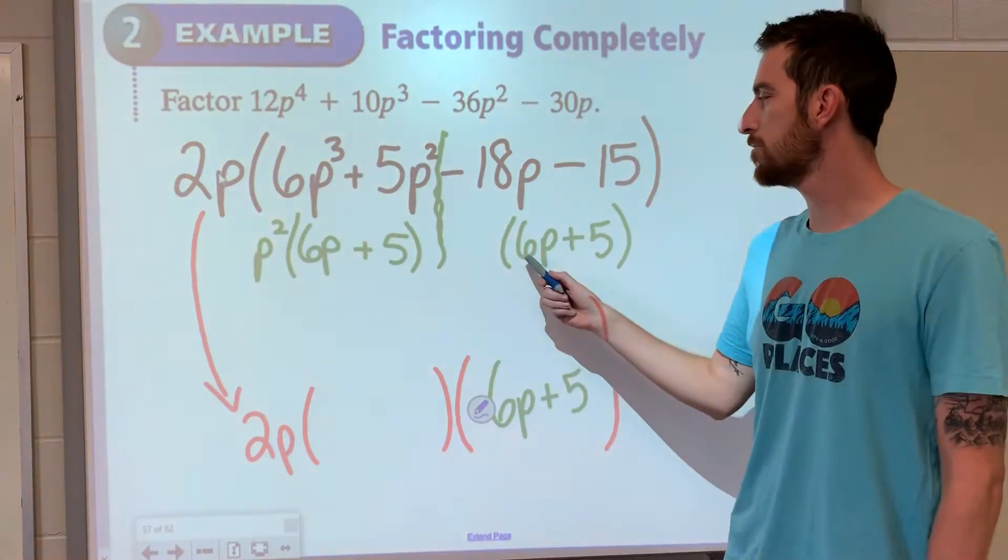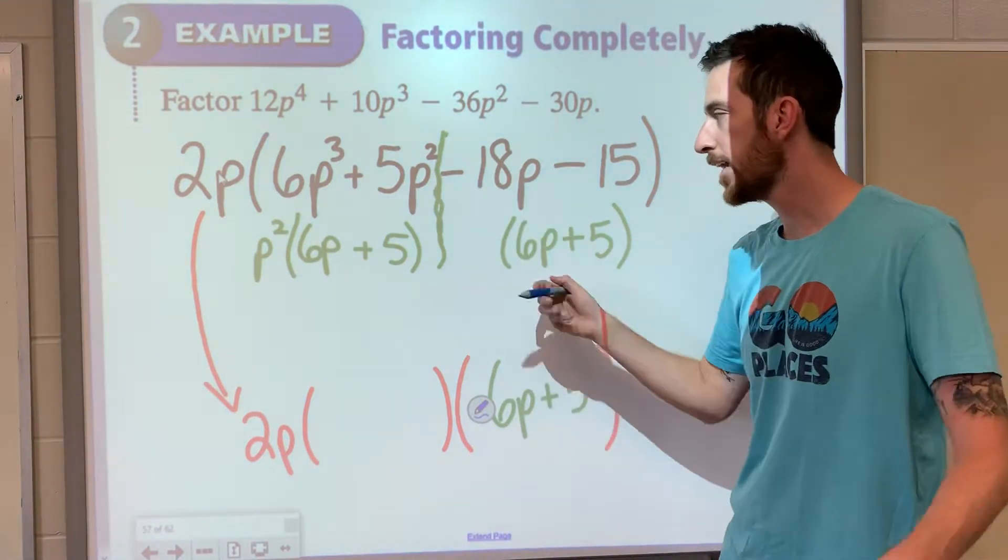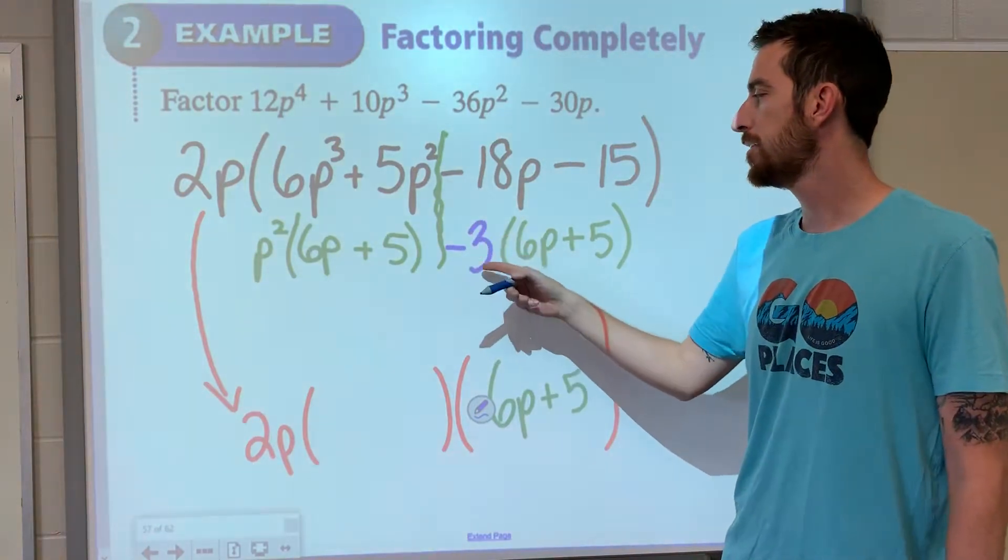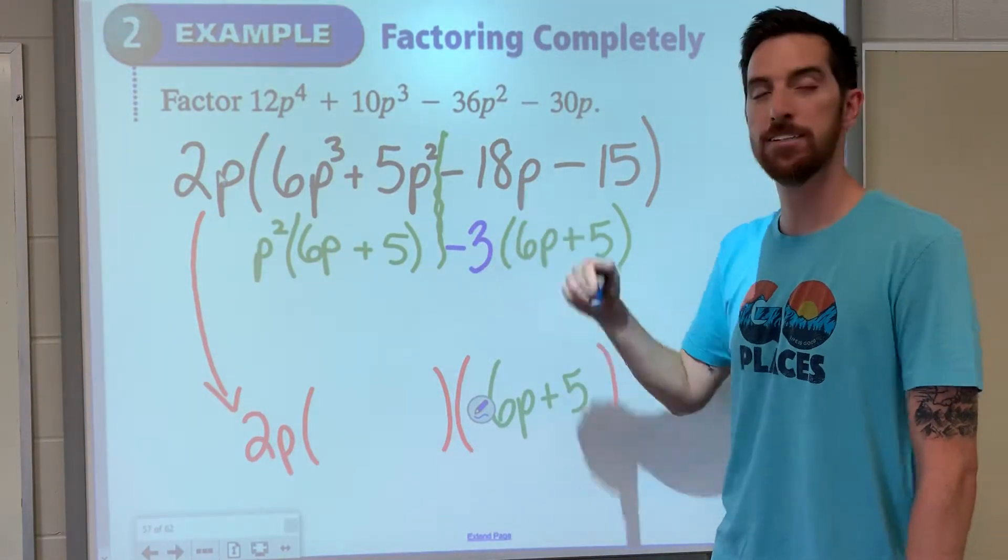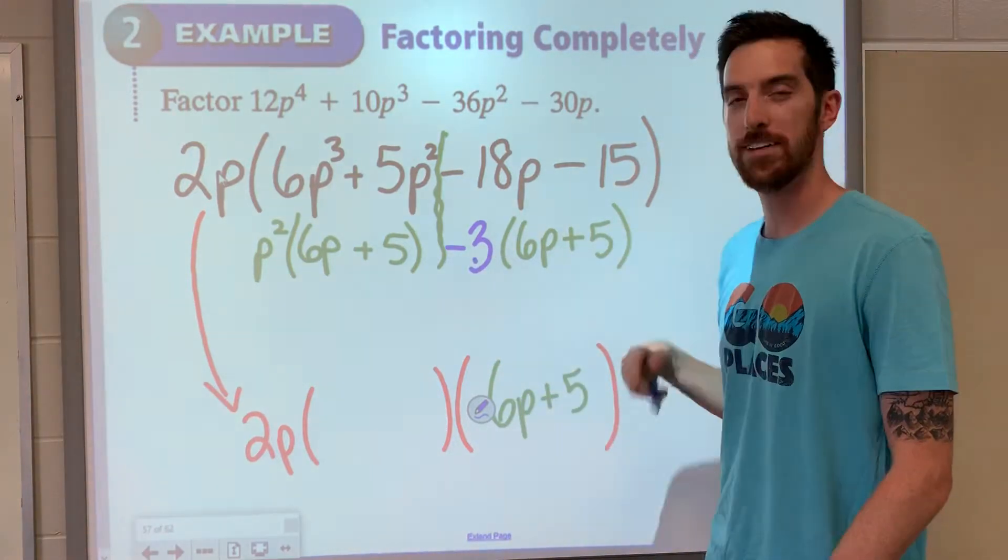But what do we have to kick out? 6 times what would give us negative 18? Negative 3. Is negative 3 times 6p negative 18p? Is negative 3 times positive 5 negative 15? So the other set of parentheses then would be p squared minus 3.